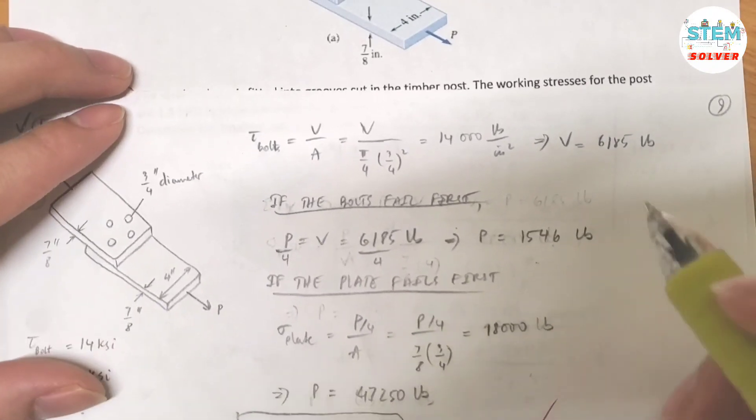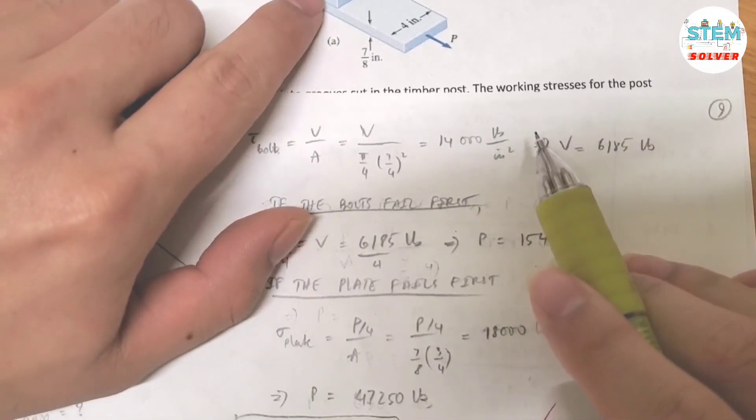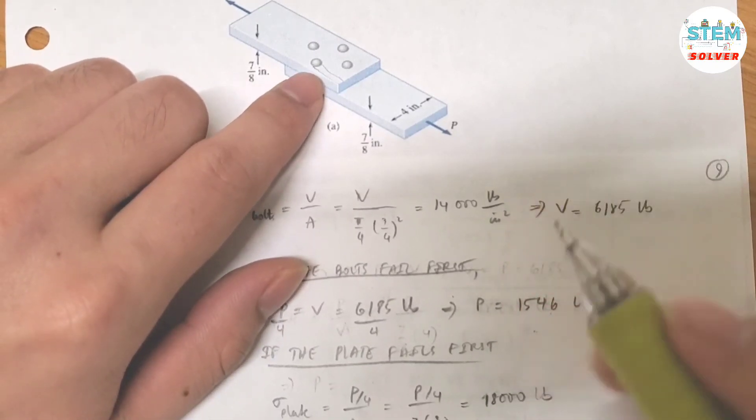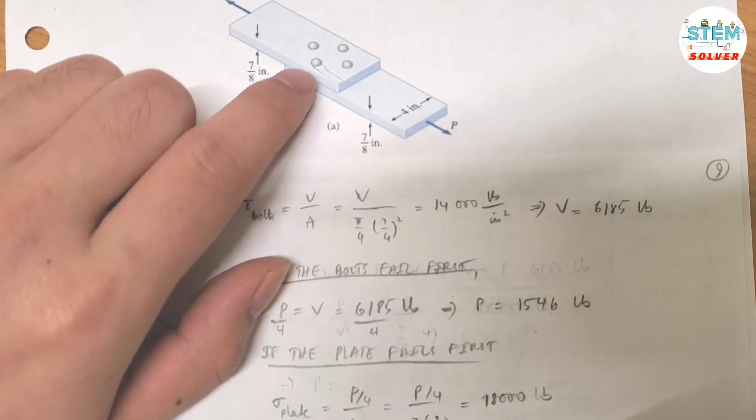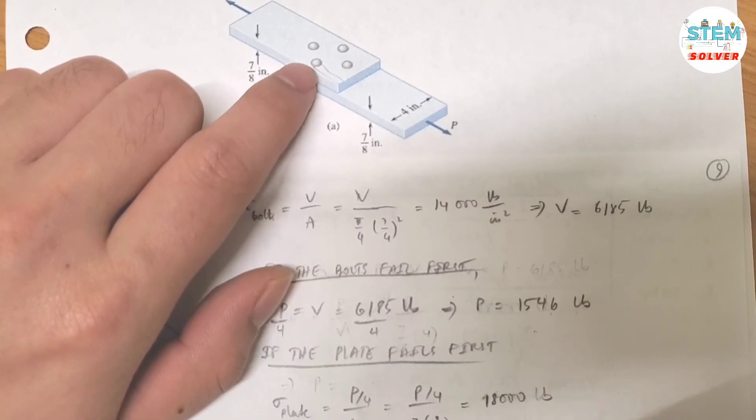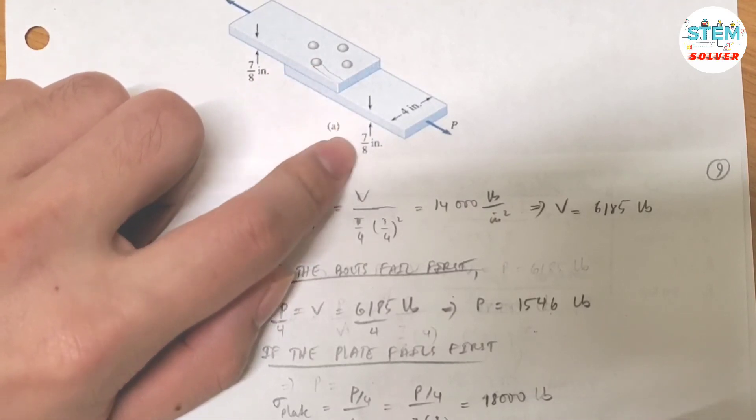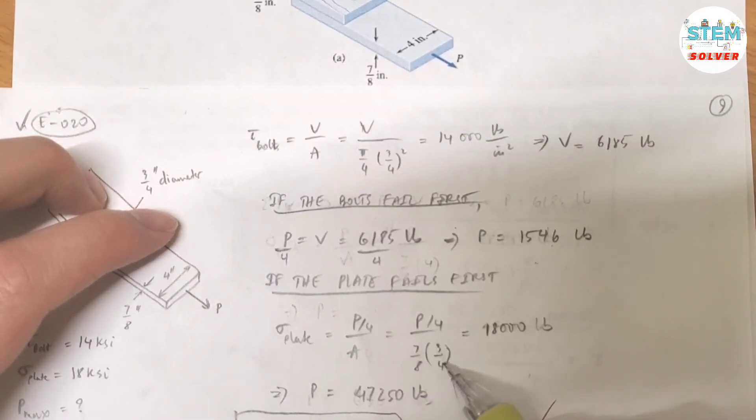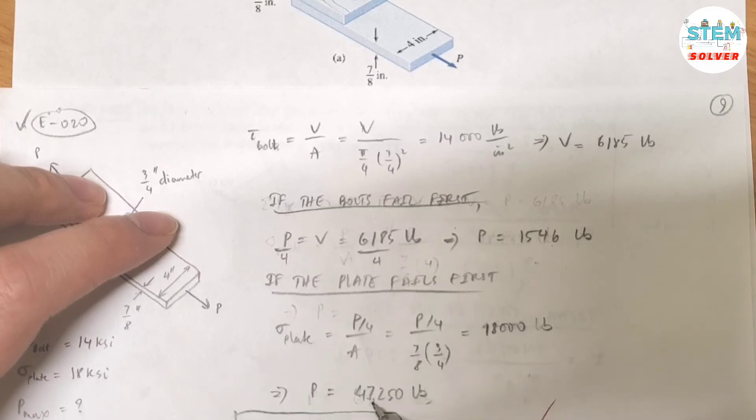So back to the problem. You have to find the area of this bearing stress failure. This area is the thickness times the diameter. The diameter of this failure is the diameter of the rivet which is 3/4, and the thickness of the blade is 7/8. So I have P/4 divided by 7/8 times 3/4 equals 18,000 pounds. So for P I got 47,250 pounds.